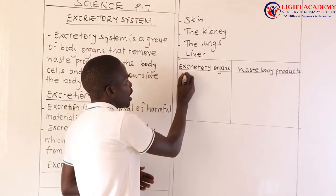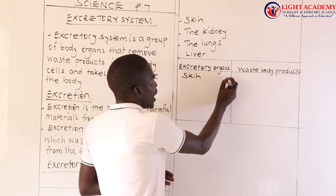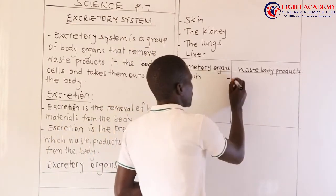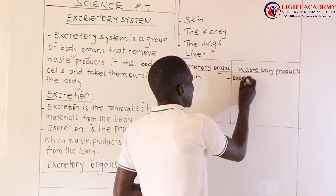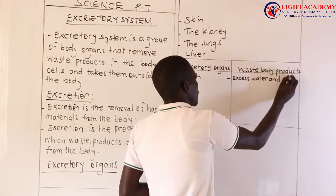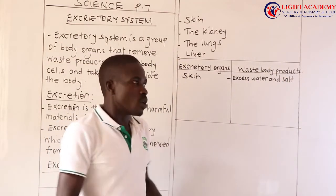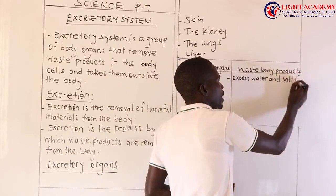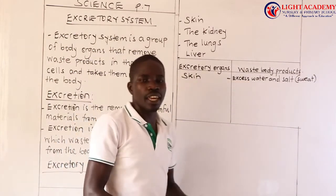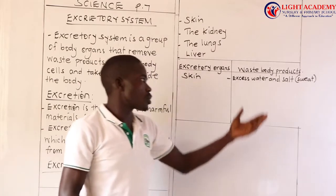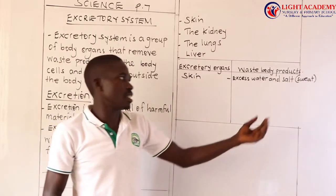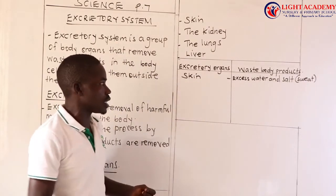Let us start with the skin. Your skin removes what we call excess water and salt. The skin removes excess water and salt, and they form what we call sweat. Excess water and excess salt are the components of sweat.